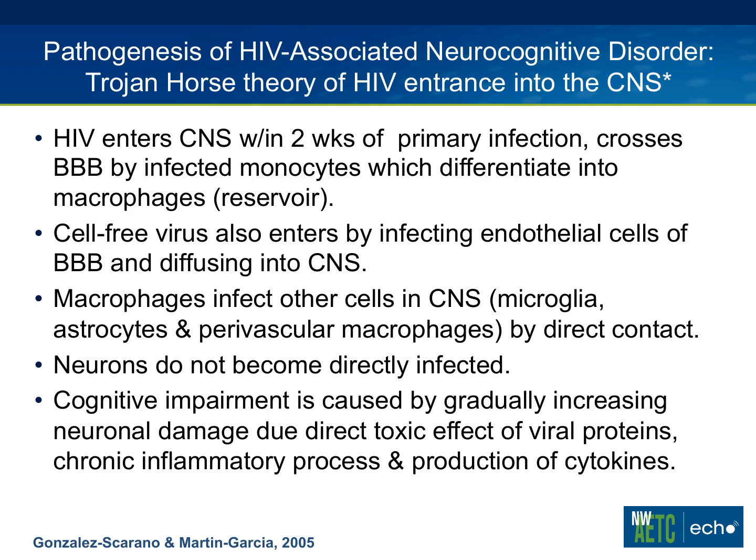Neurons don't become directly infected. However, the cognitive impairment is caused by gradually accumulating neuronal damage due to the direct toxic effect of viral proteins, as well as the chronic inflammatory process, chronic immune activation, and production of cytokines that occurs when people have HIV disease. So the longer they have HIV disease, the more likely they are to have accumulating damage to their central nervous system.